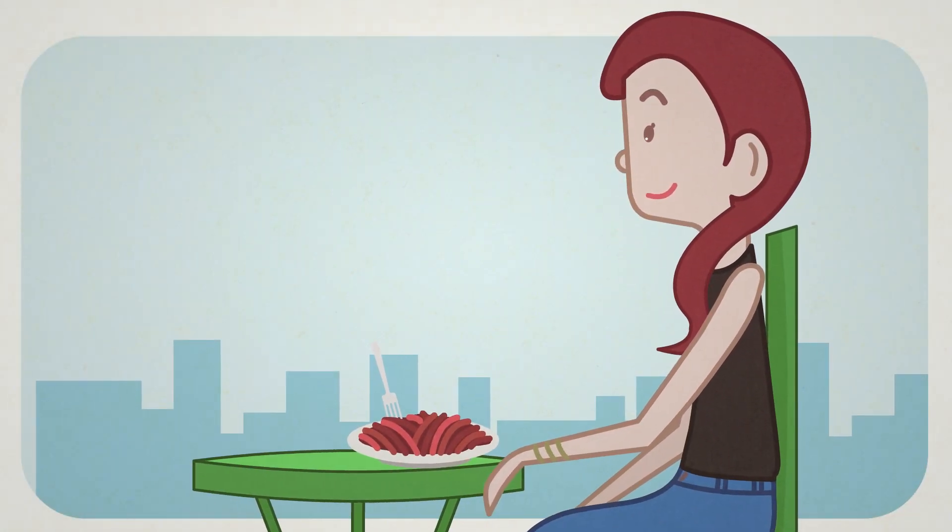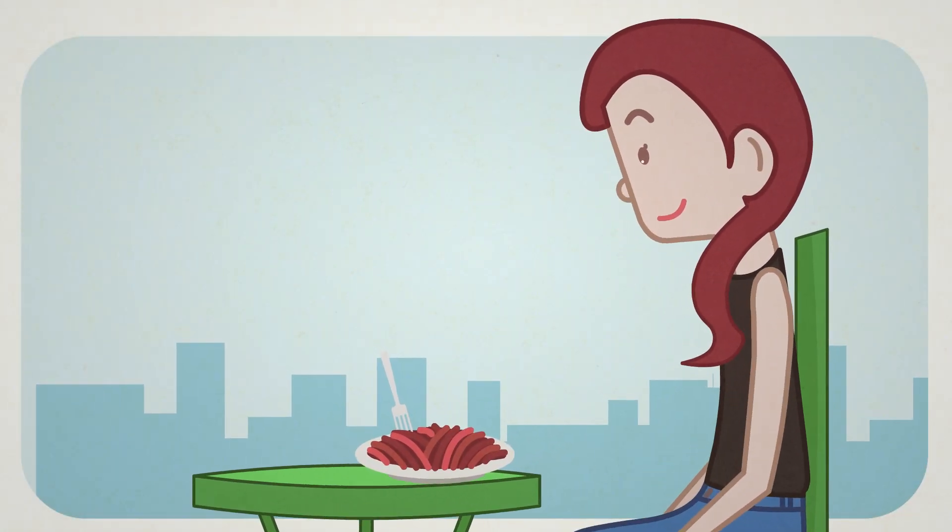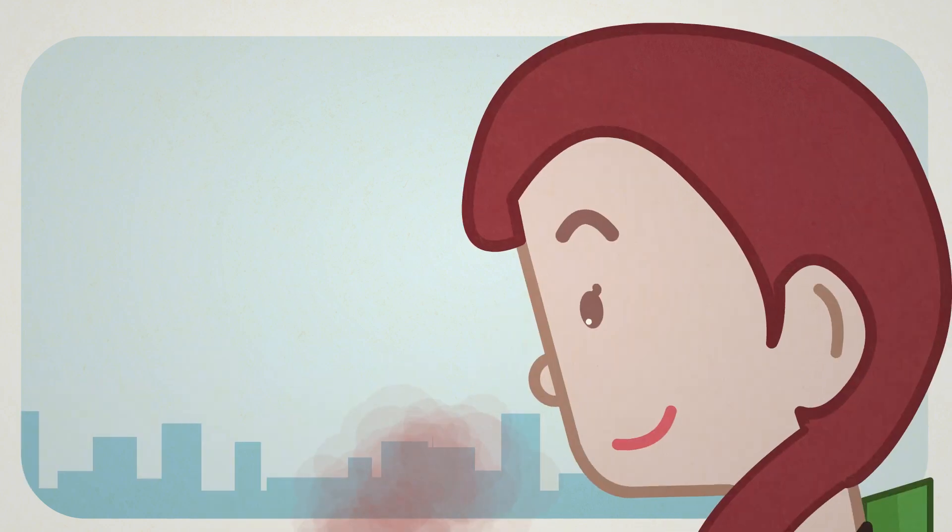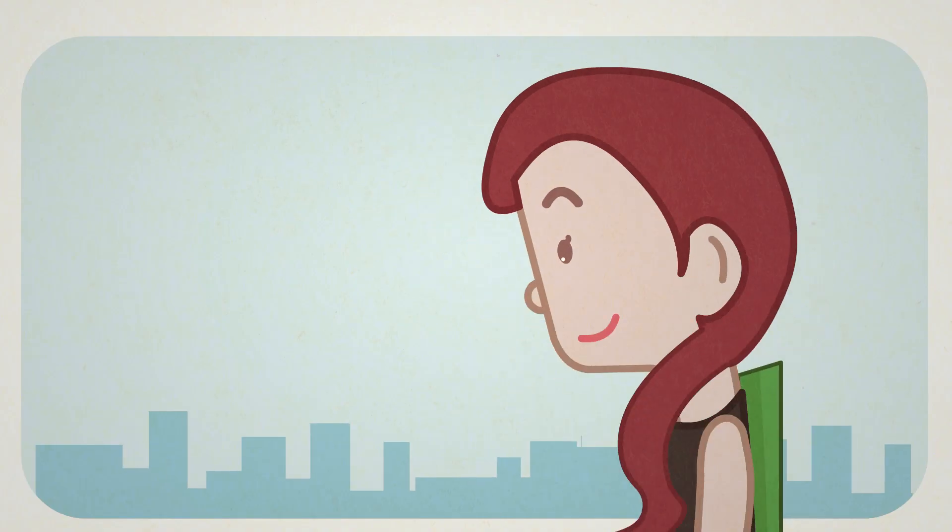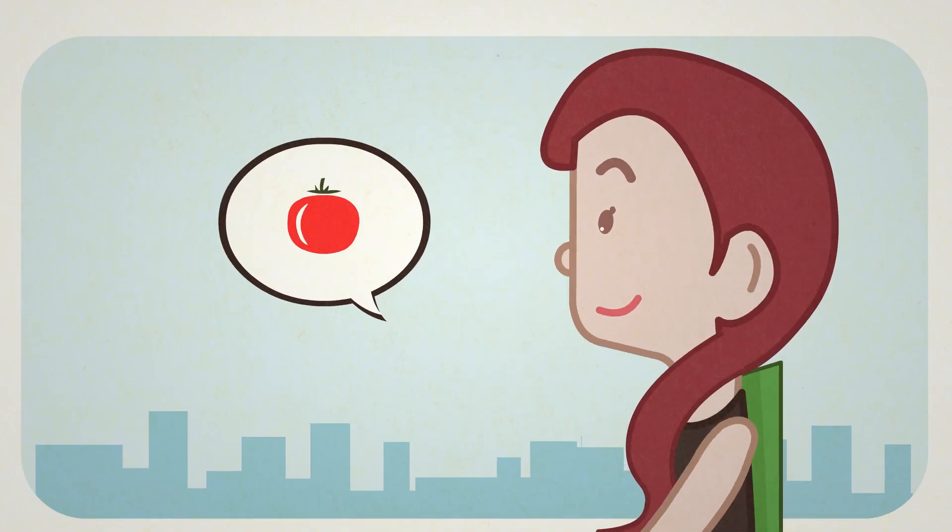When we breathe, the volatile compounds that are suspended in the air are detected by the olfactory receptors, which send information about the compounds to the brain, where they are identified as a particular smell.